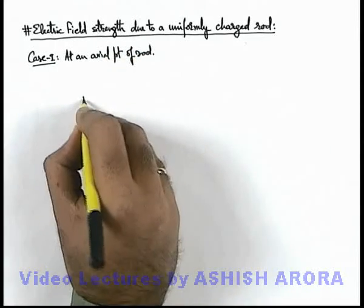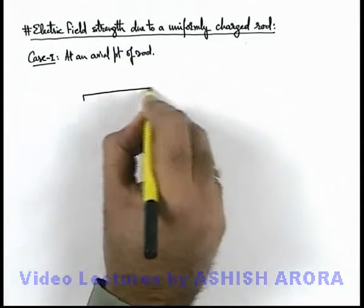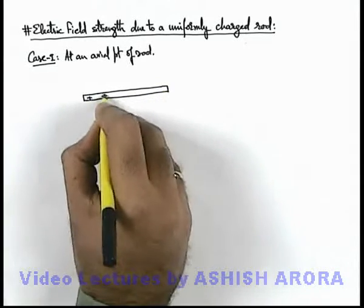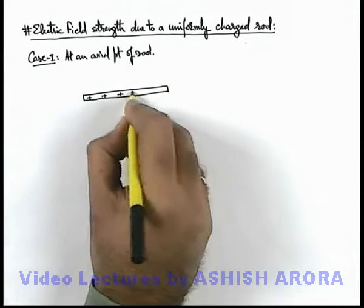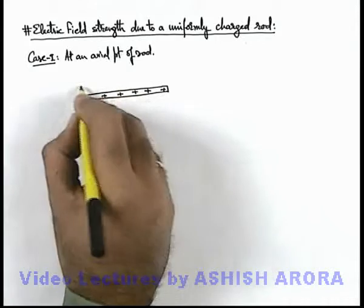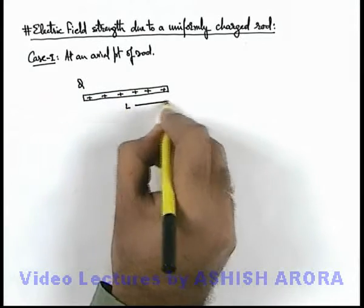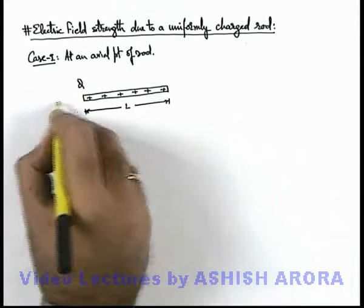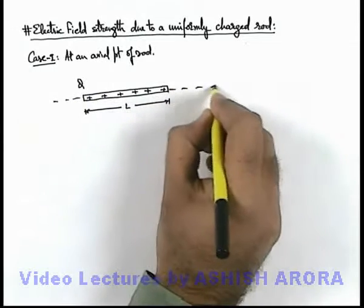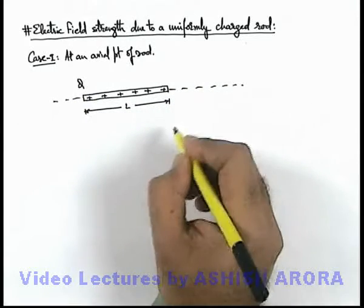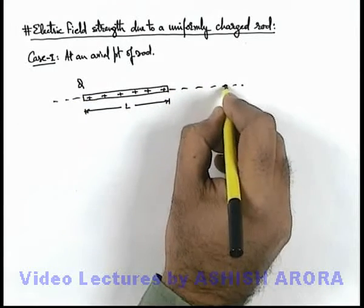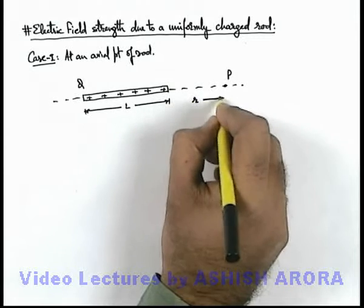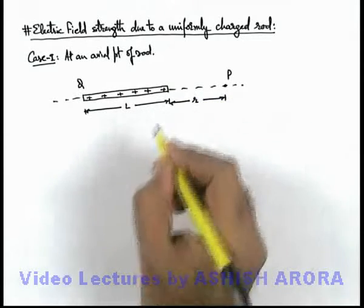Say we are given with a uniformly charged rod which is positively charged, with a charge q and it is of length l. On the axis of the rod, we are required to find the electric field strength at a point P located at a distance r from one end of the rod.